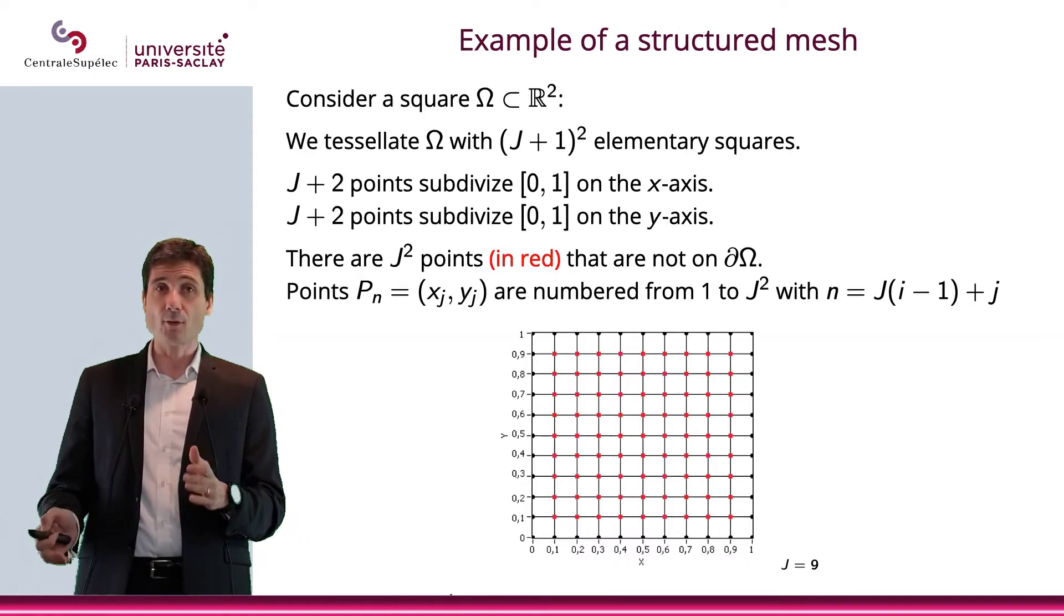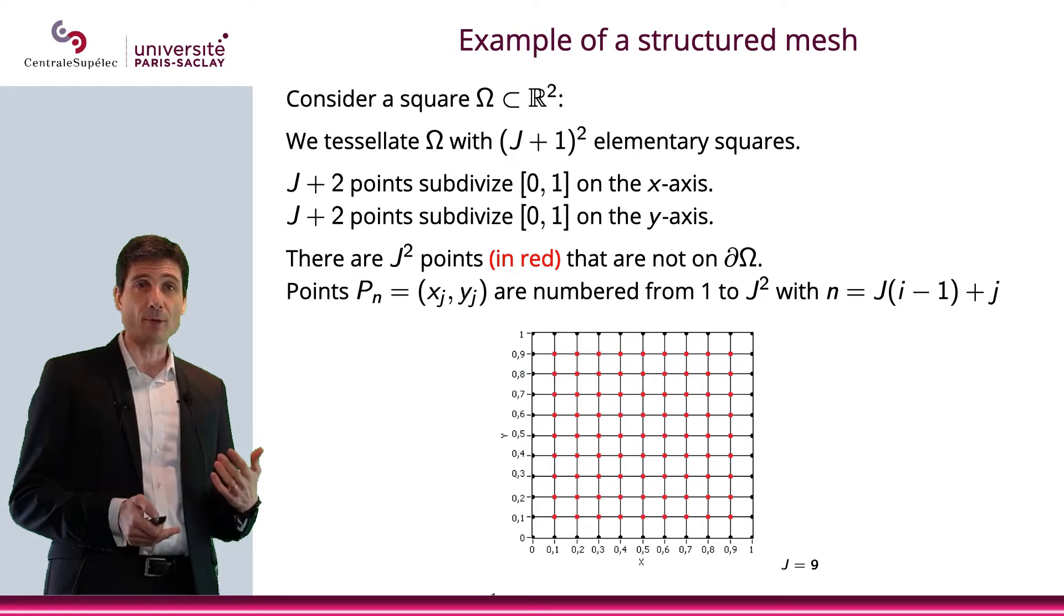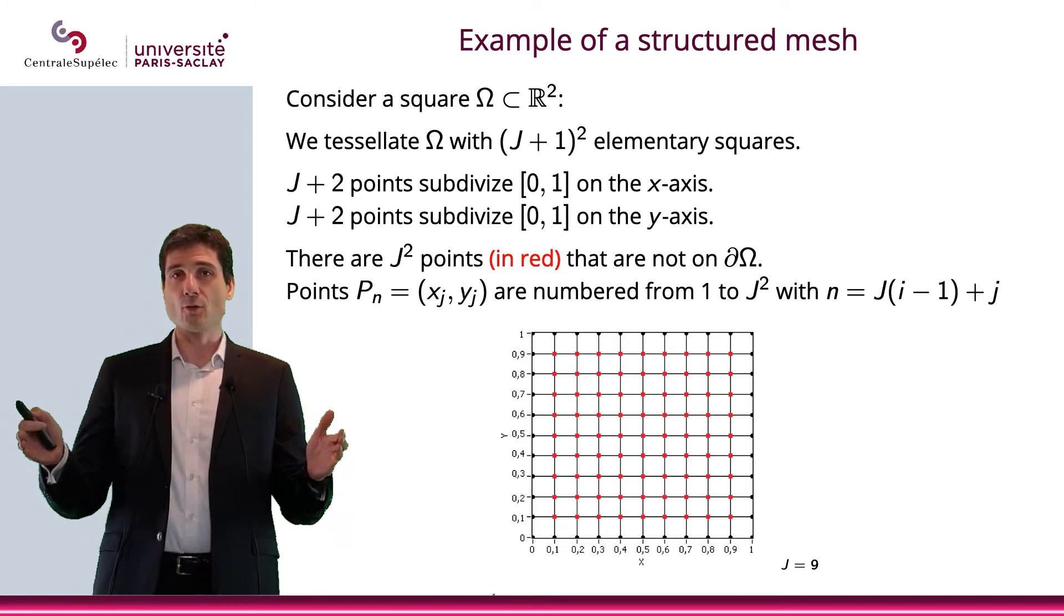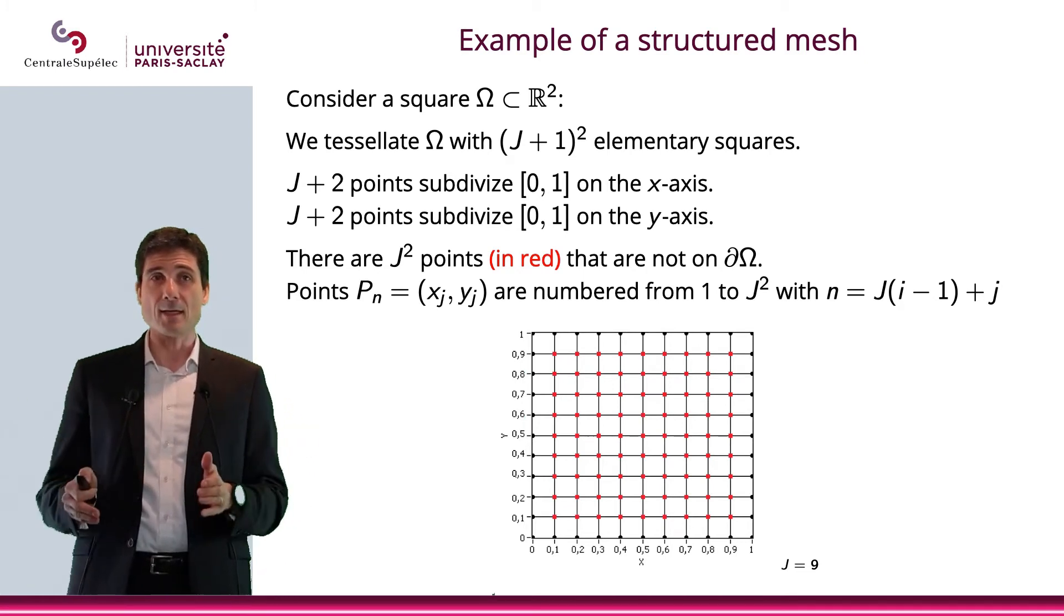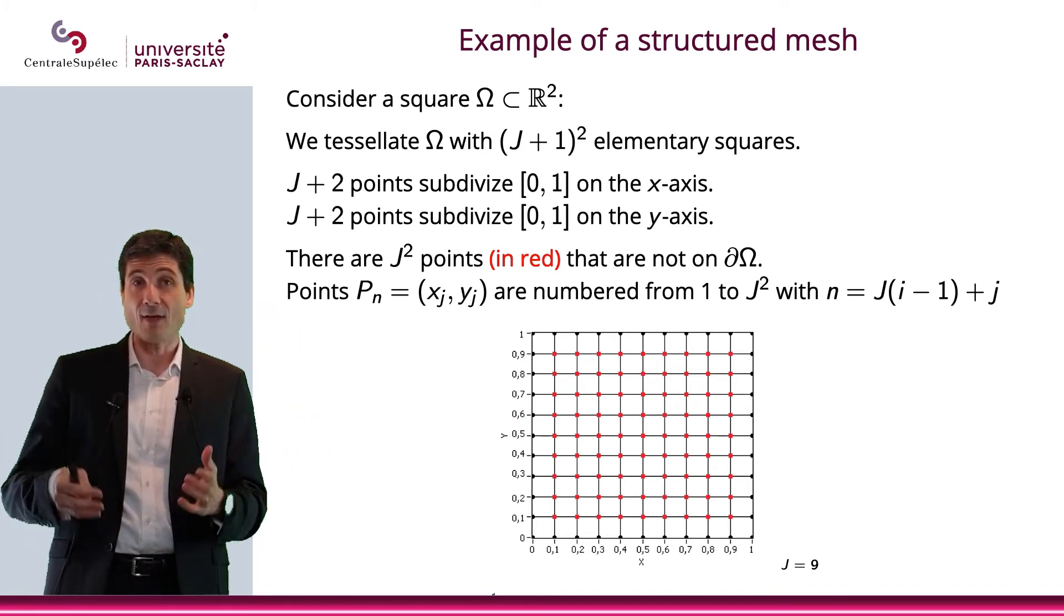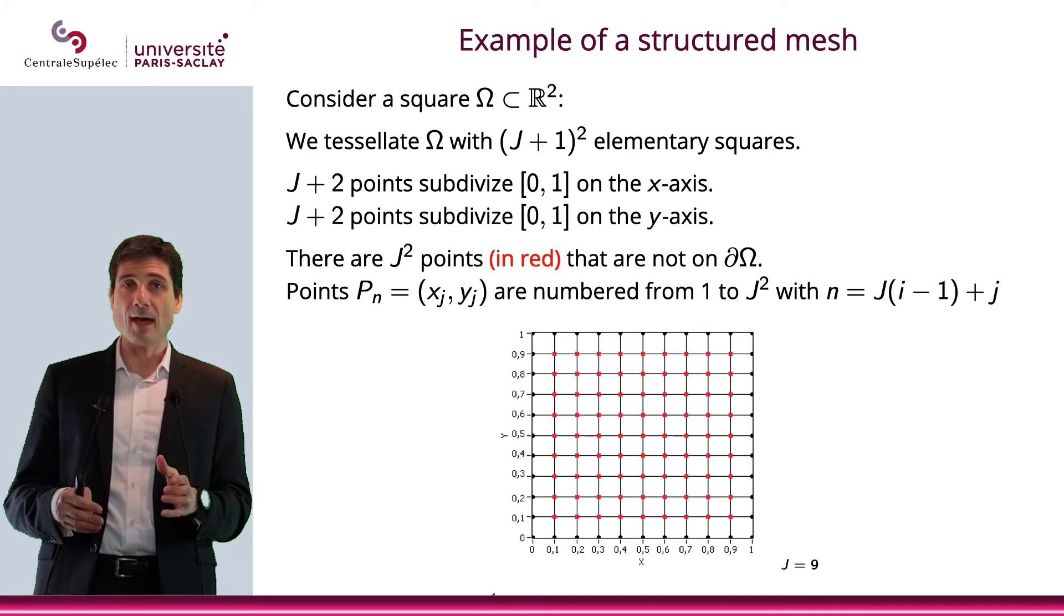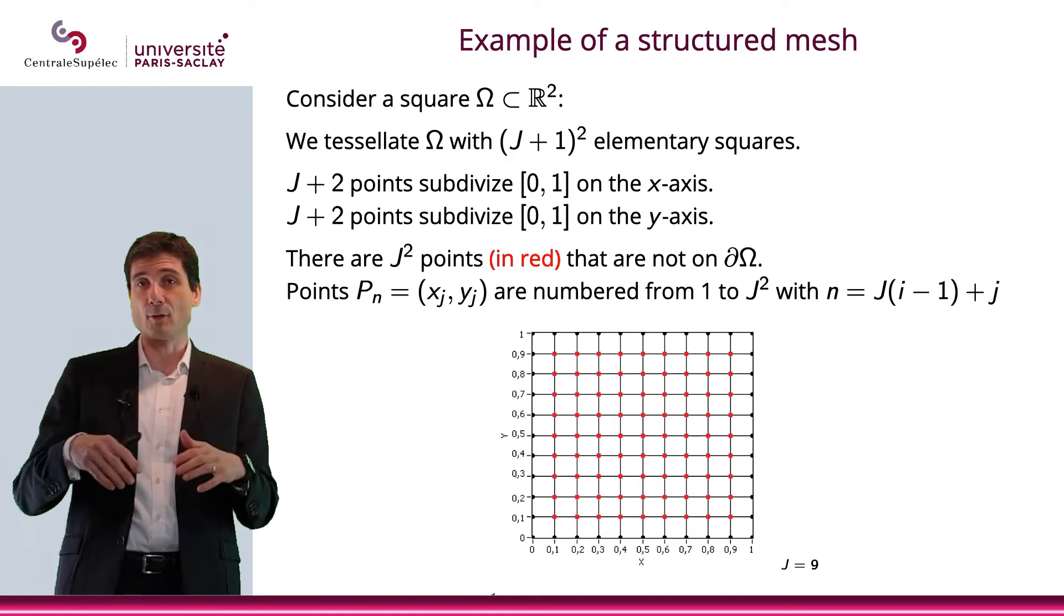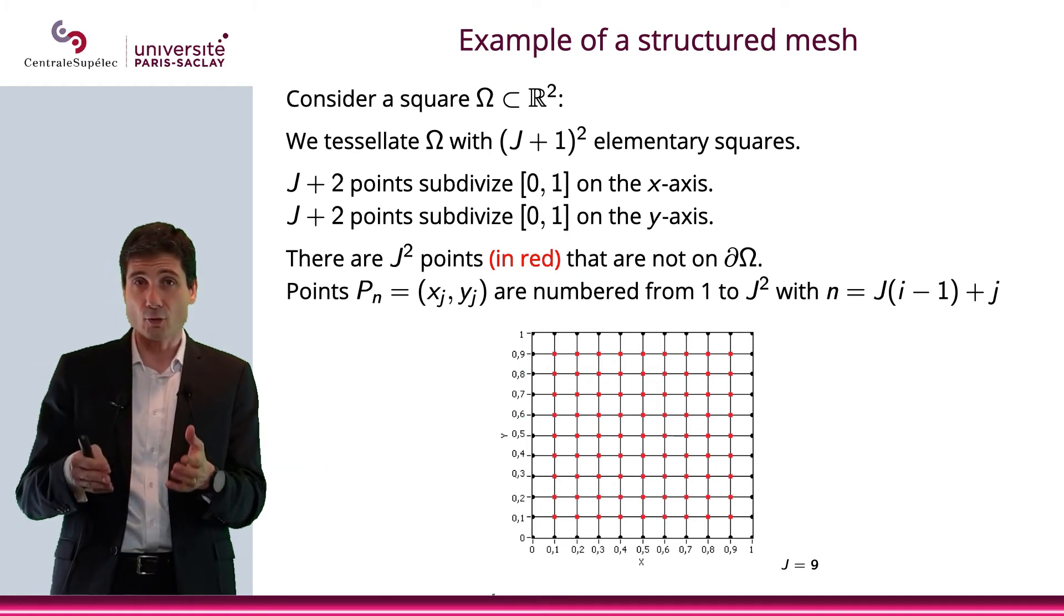Let me give you a few examples. If you consider a square here, omega, included in R², then you can tessellate this square with (J+1)² elementary squares. You basically first subdivide one of the edges in J+2 points. So basically, you subdivide [0,1] in J+2 points. That's on the x-axis. And you do the same on the y-axis. And what happens is that you will have J² points inside of your square. In other words, boundary not included. And this will basically be the unknowns. If, say for instance, you have a Dirichlet boundary condition, then that will be something that you will be looking for the solution on the red dot.